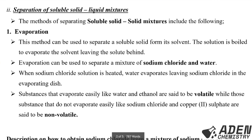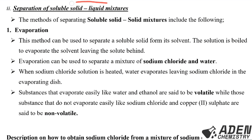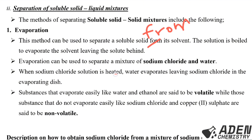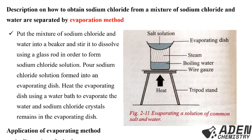Next, separation of soluble solid-liquid mixtures. Method number one is evaporation. This method is used to separate a soluble solid from its solvent. The solution is boiled to evaporate the solvent, leaving the solid behind. For example, when sodium chloride solution is heated, water evaporates leaving sodium chloride in the evaporating dish. Substances that evaporate easily, like water and ethanol, are volatile, while those that do not evaporate easily, like sodium chloride and copper sulfate, are non-volatile.